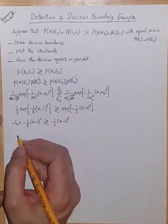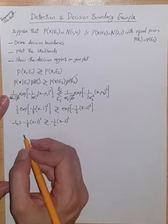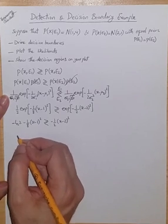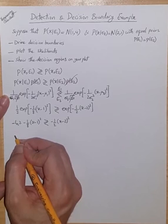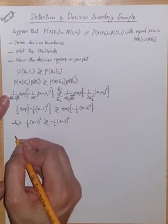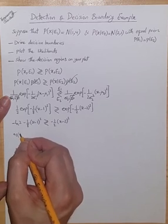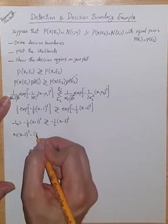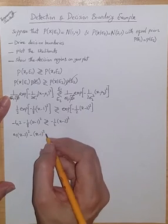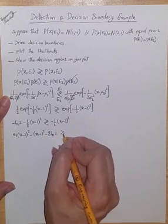We can multiply both sides with, let's say, minus 8. So, we get plus 8, and then we can move this to the other side. So, we get 4 times x minus 2 squared minus x minus 1 squared minus 8 ln 2 compared with 0.